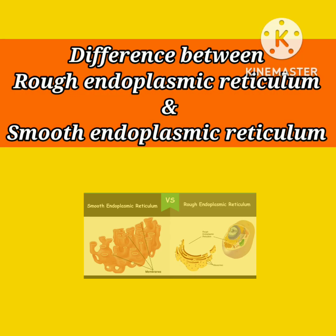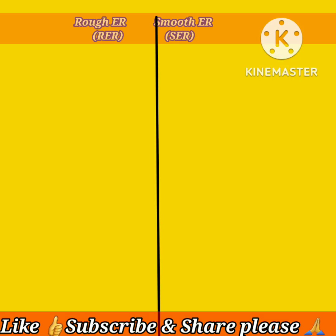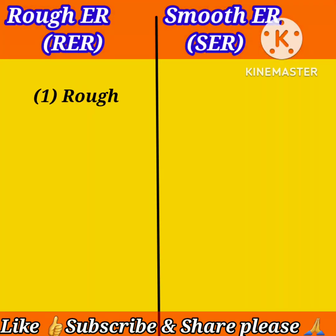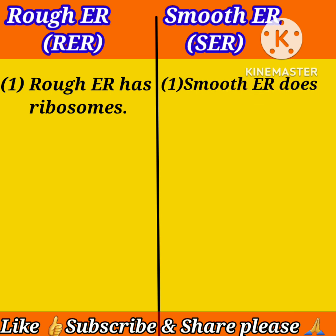Difference between rough endoplasmic reticulum and smooth endoplasmic reticulum. First difference: rough endoplasmic reticulum has ribosomes, while smooth endoplasmic reticulum does not have ribosomes.